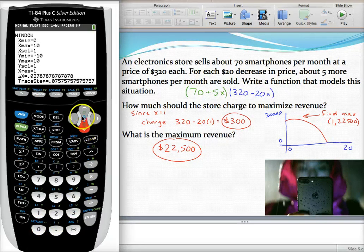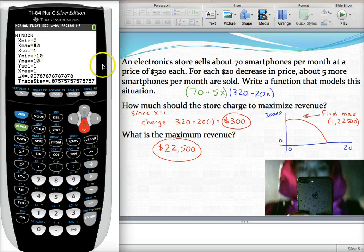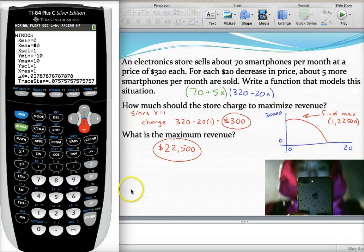And then for the Y, sorry, X max, the most number of times I can change the price. Well, I have a little bit of freedom there. It looks like when I sketched this out earlier, I used 20.